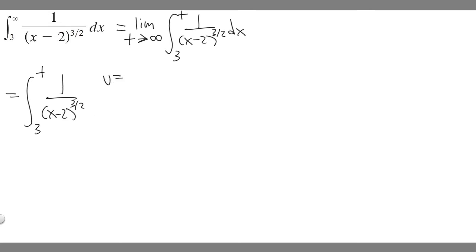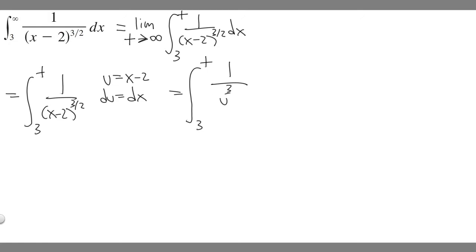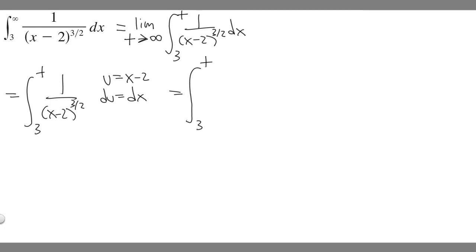So we can say that u equals x minus 2. That means du equals dx, since the derivative of x minus 2 is just 1. So if we rewrite this integral, from 3 to t of 1 over u to the 3/2, and since 1 over u to the 3/2 is the same as u to the minus 3/2, we rewrite it as u to the minus 3/2 du.